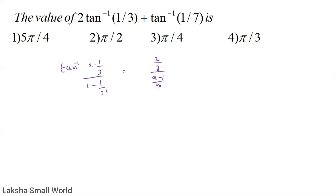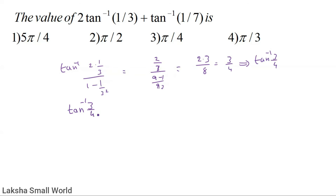Solving: numerator 2/3, denominator (9−1)/9 = 8/9. So 2×3 / 8 = 6/8 = 3/4. Thus 2·tan⁻¹(1/3) = tan⁻¹(3/4). Now compute tan⁻¹(3/4) + tan⁻¹(1/7).